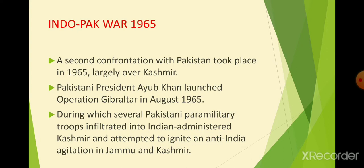The USSR was supplying a lot of modern weapons including tanks, rifles, and aircraft to Pakistan. At that time, India did not have many modern weapons. We had the old weapons that were used in World War I and II, while the Pakistani forces were getting modern weapons — tanks and aircraft — from the USSR.